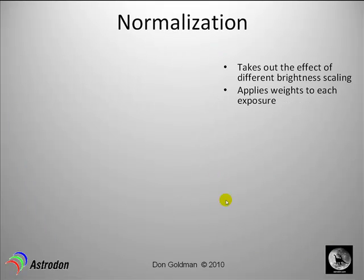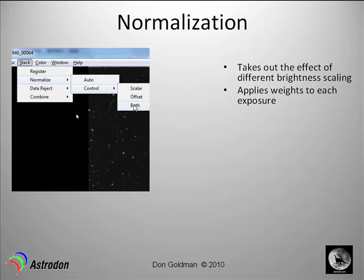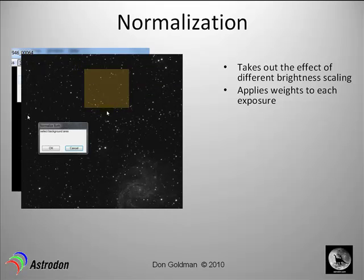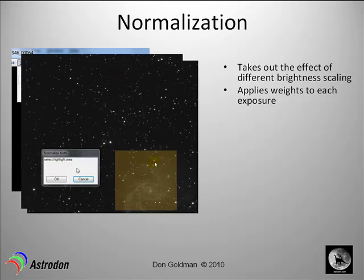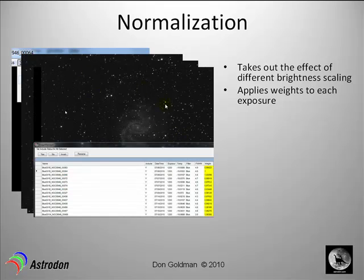The next step is to normalize, which removes the effects of different brightness between frames. For example, if the moon started coming up and the last few blue frames are lighter than the rest, normalization corrects for that. In CCD Stack, go to normalize, select control and both, then select an area of background and click OK. Then select an area of your object — a highlight area — and click OK. It normalizes all the frames; the scale factors should all be around one if there weren't big changes in moonlight. Everything looks good so far.